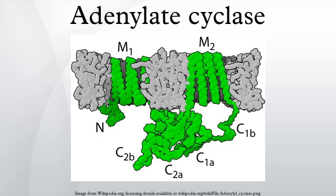There are 10 known isoforms of adenylate cyclases in mammals. These are sometimes called AC1, AC2, etc., and — somewhat confusingly — Roman numerals are sometimes used for these isoforms, which all belong to the overall AC class III. They differ mainly in how they are regulated, and are differentially expressed in various tissues throughout mammalian development.